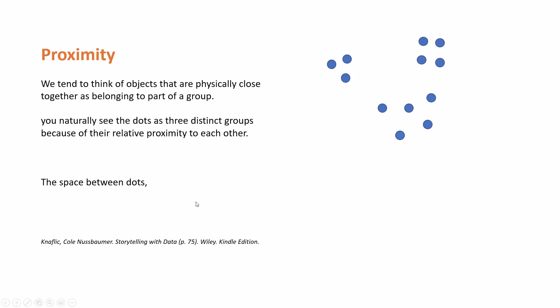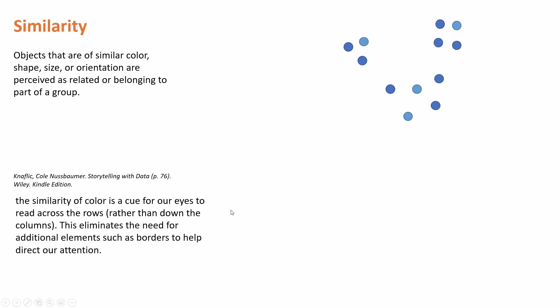The first pre-attentive feature is proximity — every object that is close to others is considered as a group. As you can see, we can set these three dots close to each other, four dots close to each other, and these five close to each other, and our mind naturally groups them.